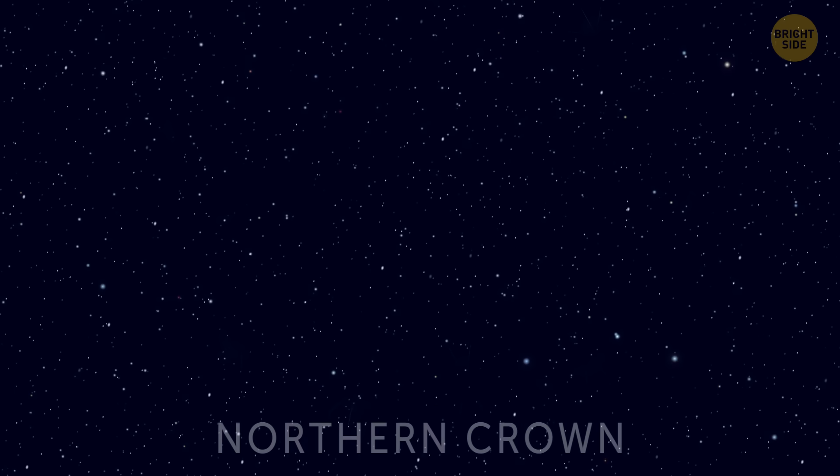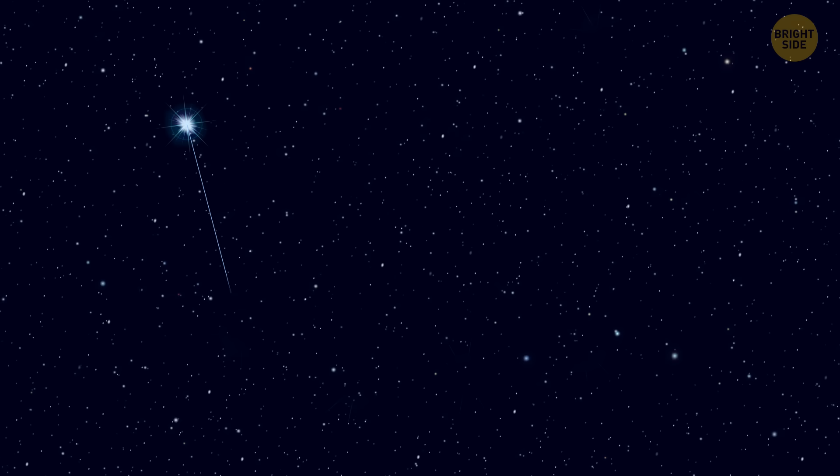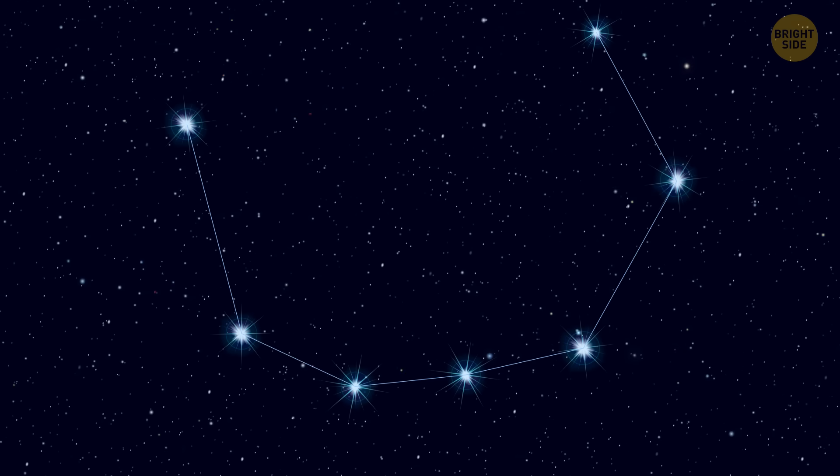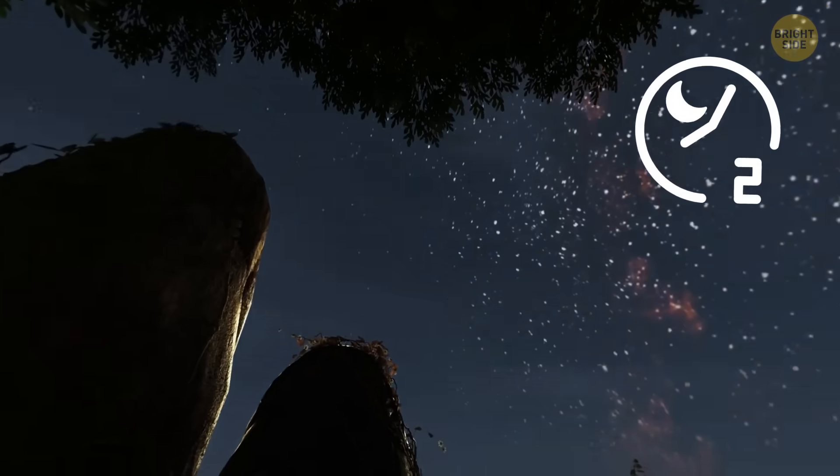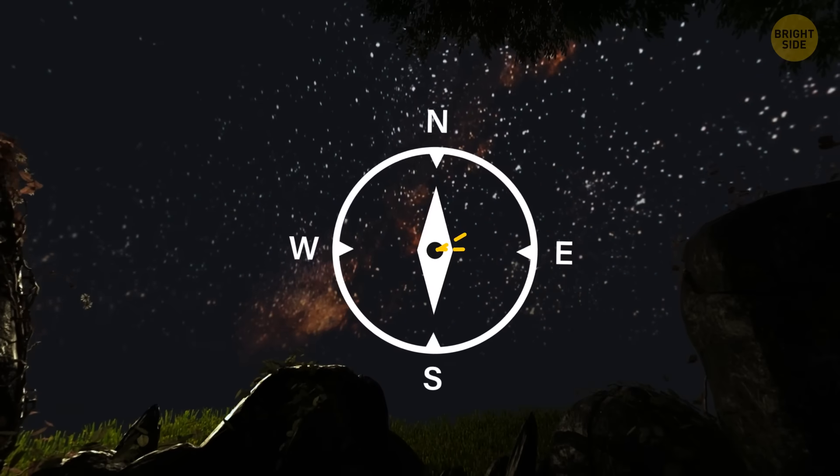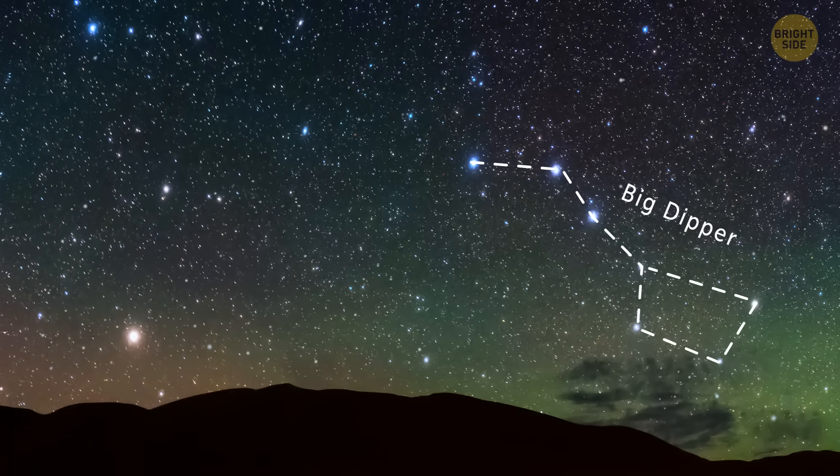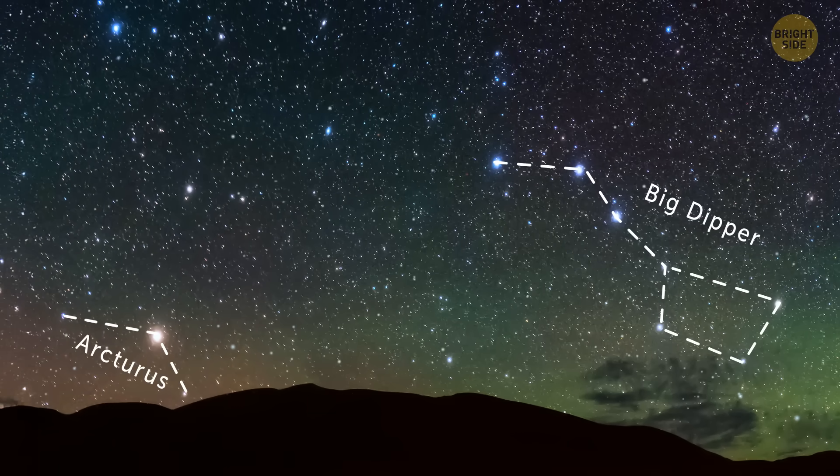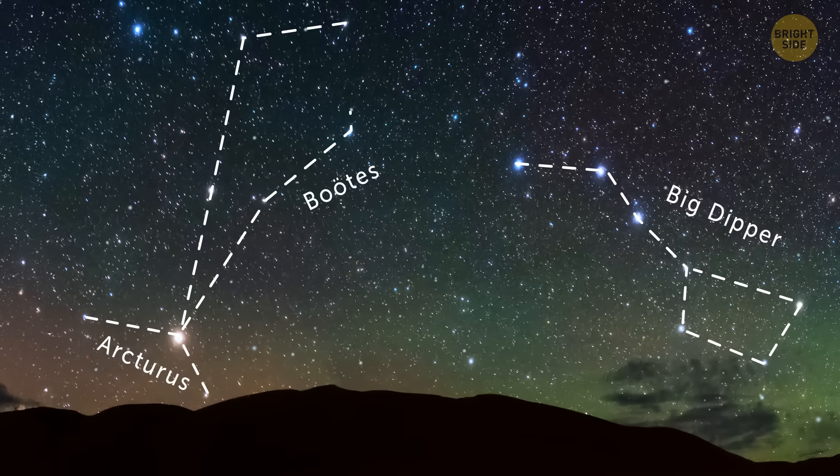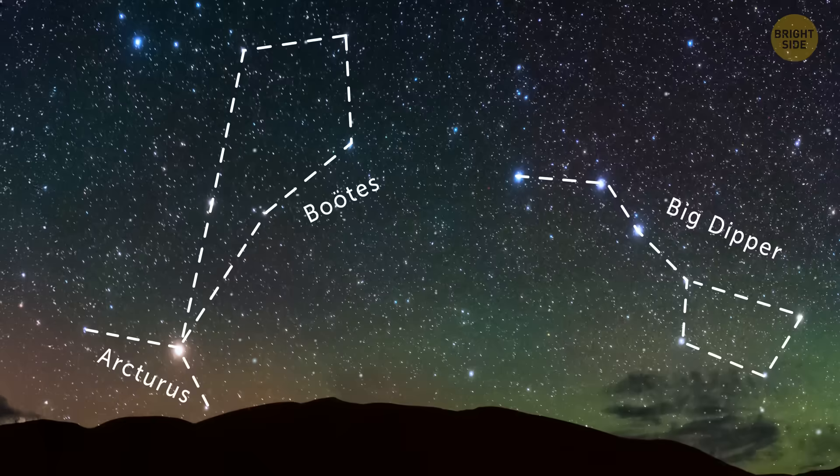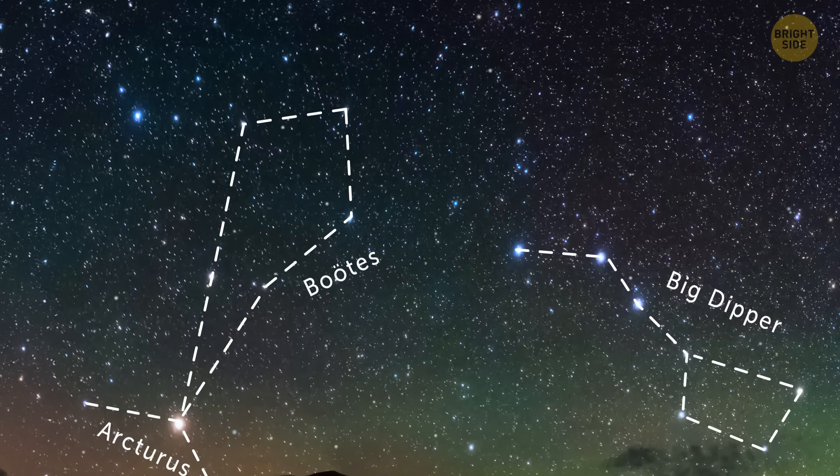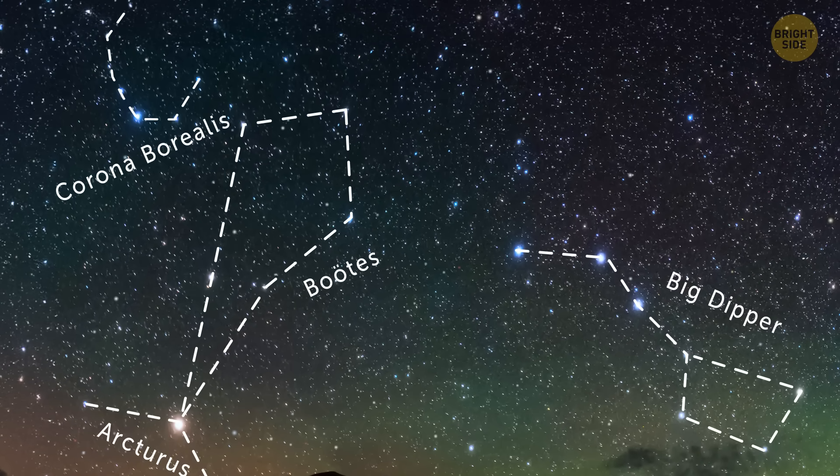The constellation of Corona Borealis, also known as the Northern Crown, is one of the most beautiful out there. It's a curved semicircle of seven stars, which is easy to find in April. You should go outside two hours after dark and look to the East-North-East. Once you find the Big Dipper, use the curve of its handle to arc to Arcturus, finding the bright star in the Boötes constellation due east. If you go diagonally down to the East-North-East horizon, you'll spot Corona Borealis.